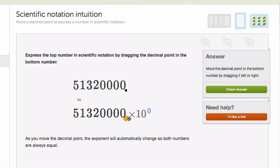We want you to think, why does my exponent change the way it does as I move my decimal? When I move my decimal to the left, why is it that the exponent goes up? And when I move the decimal to the right, why is it that the exponent then goes down? What's happening here?